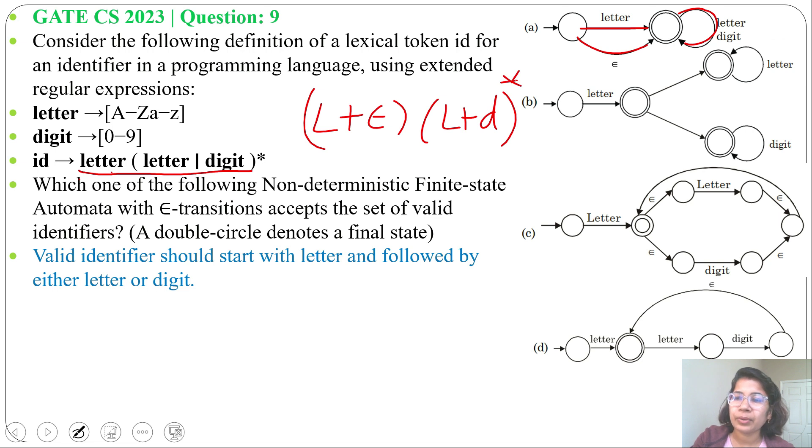So it can start with digit also. If from start state we are reaching to final state by epsilon and here we can start with digit also. But ID should start with letter. That's why option A is wrong.